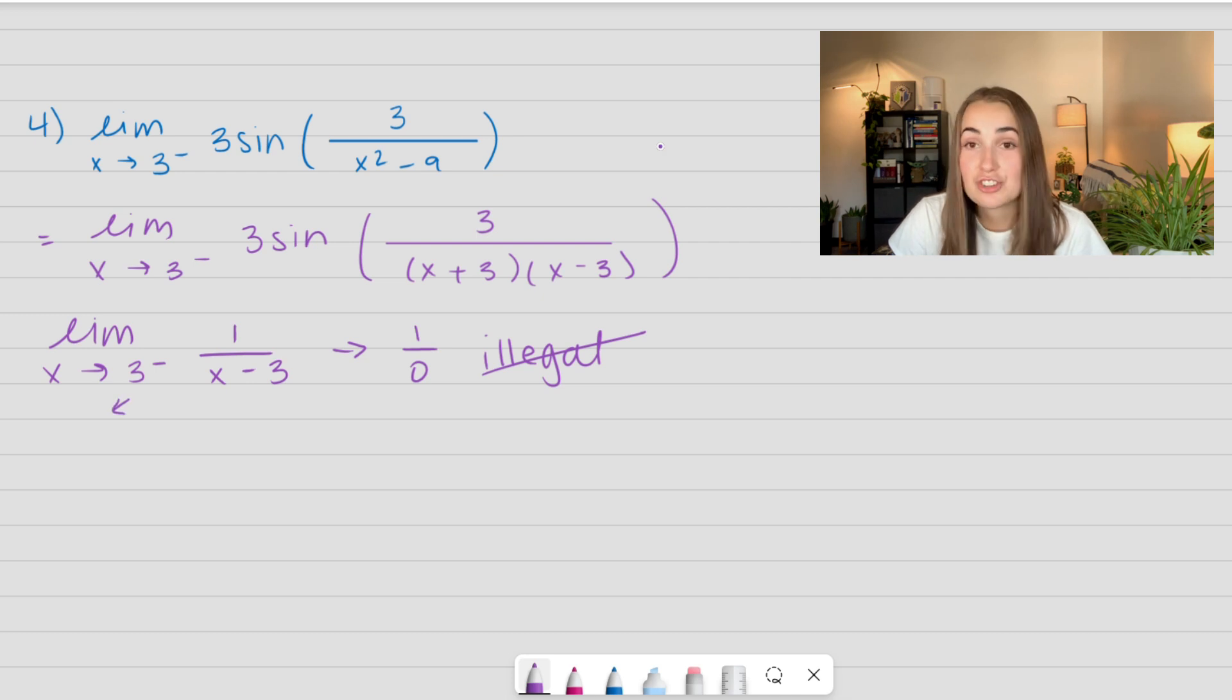If I choose a number just to the left of 3, I'm going to choose 2.9, and I'm going to plug that in here because all I care about is if it's positive or negative. So 2.9 minus 3 is equal to negative 0.1. So I'm approaching 0 from the left side, from the negative side.